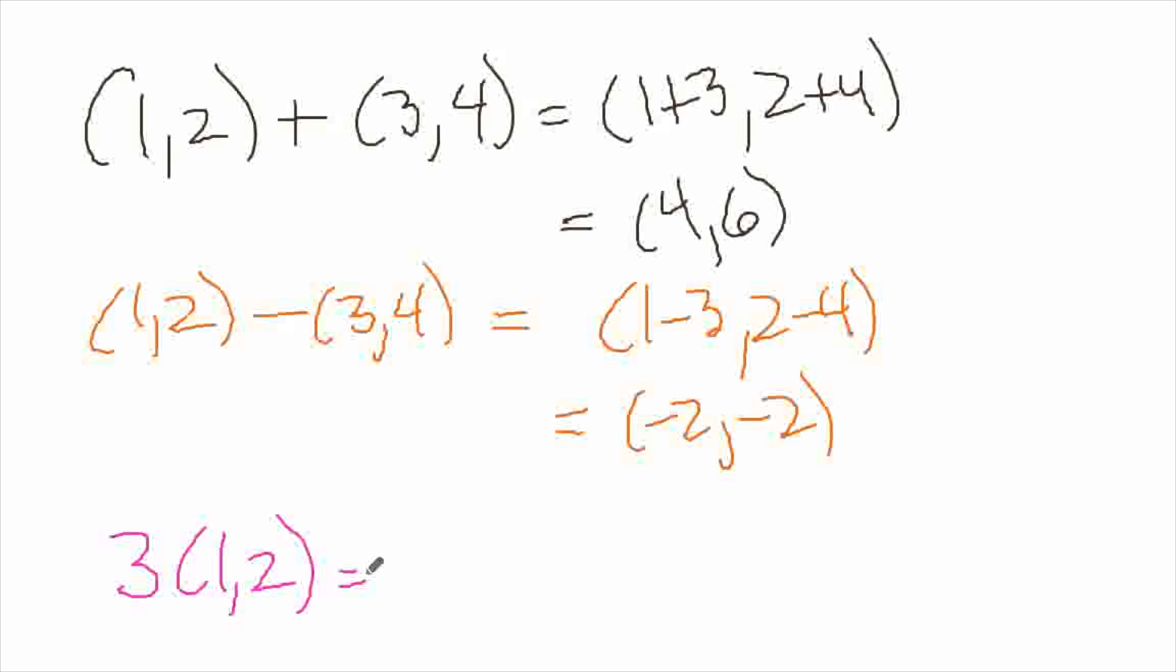And then finally what I call scalar multiplication. The scalar is another name for a number. So what if I had something like 3 times 1 comma 2? What does it mean to multiply a scalar by a number? Well, you can simply, it's been defined as simply, you distribute or multiply the scalar, the number, each of the components by that number. So then this gives 3 comma 6.